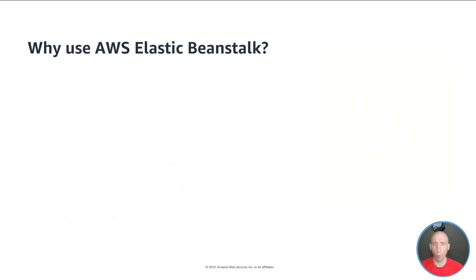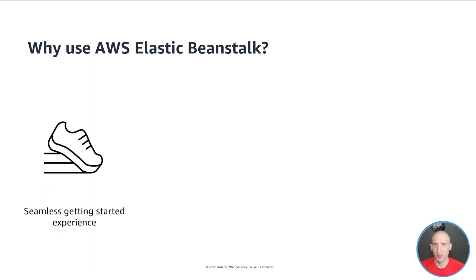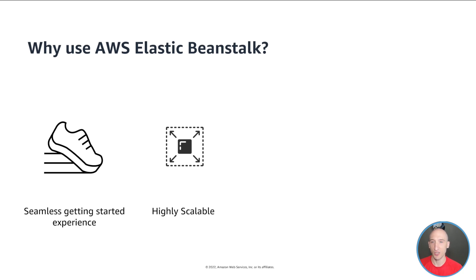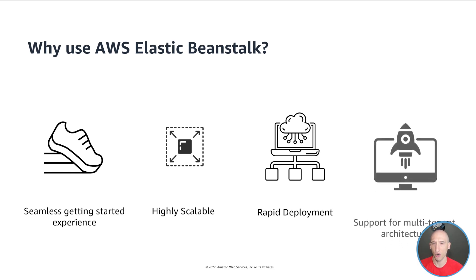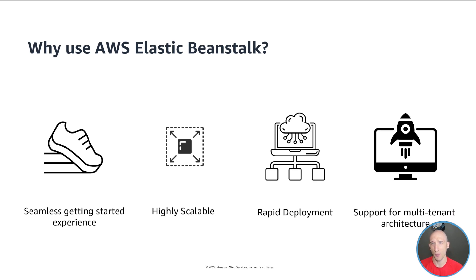Let's talk a little bit more about why we should be using Elastic Beanstalk. Firstly, AWS Elastic Beanstalk has a seamless getting-started experience. In just a matter of minutes, you can go from nothing to having your application hosted in the cloud very fast. It's also highly scalable, scales based on your need, and scales back down if needed. It also allows for rapid development and modern DevOps practices, and has support for multi-tenant architecture. It's also highly flexible, simplifies operations, and is very cost efficient. I highly recommend taking a look at what our customers are doing — there'll be a link for that in the show notes.